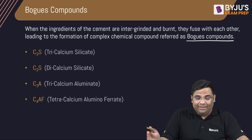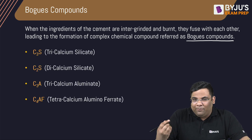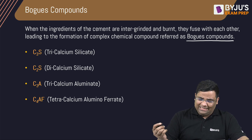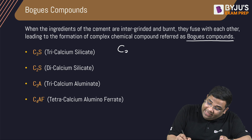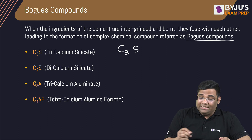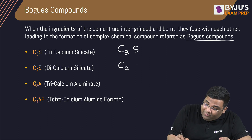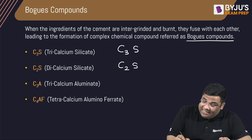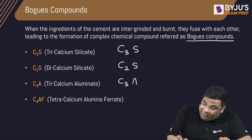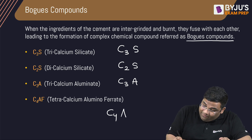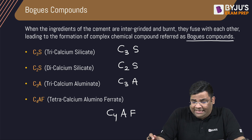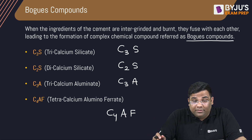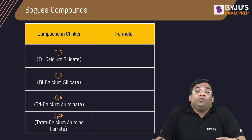We'll see four main Bogue compounds which are formed in cement. These are: C3S — that is Tricalcium Silicate; C2S — Dicalcium Silicate; C3A — Tricalcium Aluminate; and C4AF — Tetracalcium Alumino Ferrite. I will go through them in detail, as a lot of questions are asked about these.